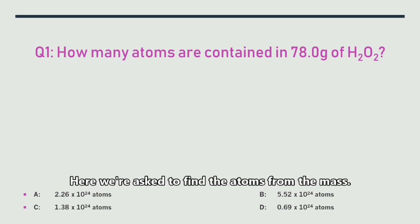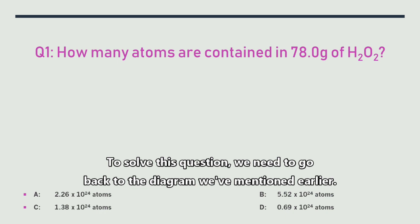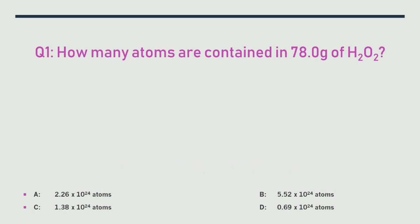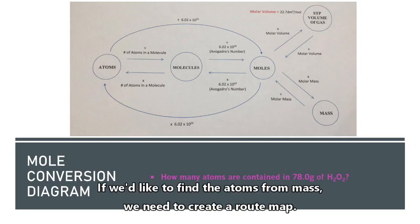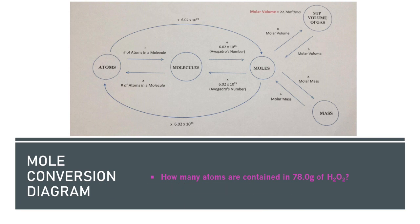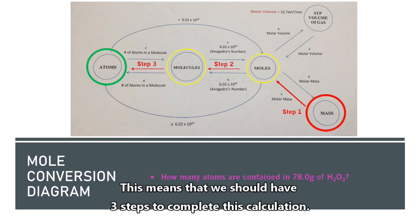Here we are asked to find the atoms from the mass. To solve this question, we need to go back to the diagram we mentioned earlier. If we would like to find the atoms from mass, we need to create a route map. This means that we should have three steps to complete this calculation.